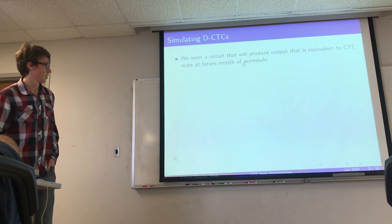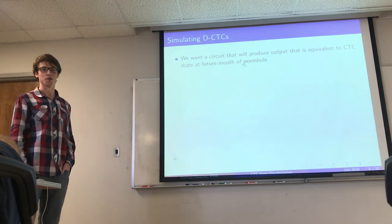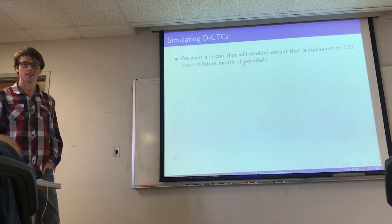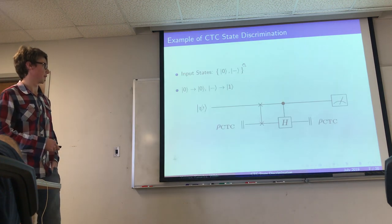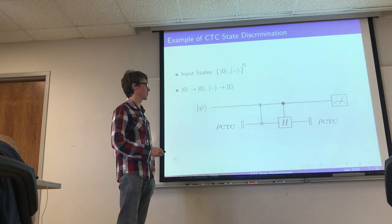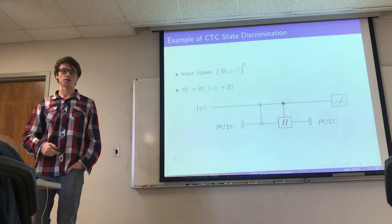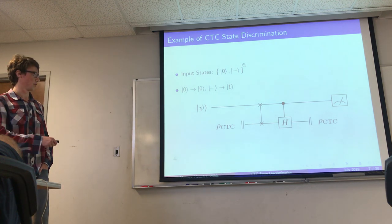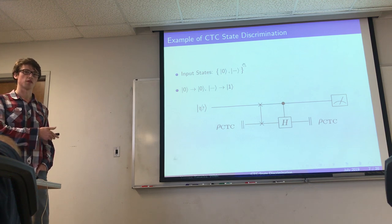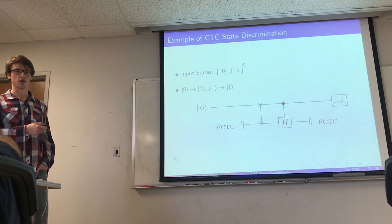It should be emphasized that this violates the uncertainty principle. It is possible because of the self-consistency condition: the fact that the input state entering the CTC must be the same as the state exiting it means the CTC acts as a non-linear channel. Since ordinary quantum mechanics operations are linear, this non-linear operation allows us to bend the laws of quantum mechanics and achieve perfect state discrimination.